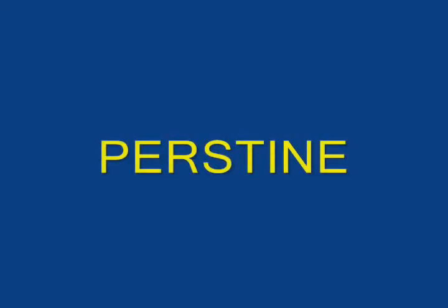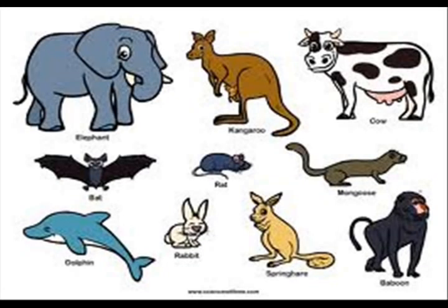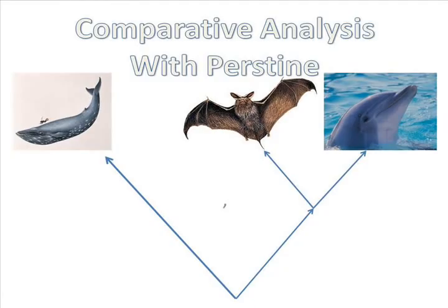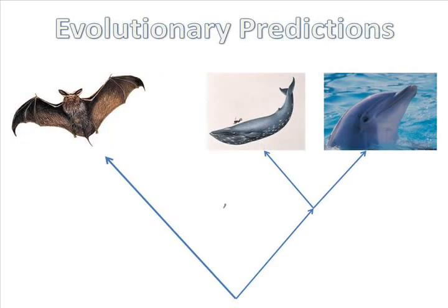My favorite example is Prestin. Prestin is the name of the gene and the name of the protein that the gene codes for. This gene is present in all mammals. However, if you make a comparative analysis with Prestin, then according to the results, dolphins and bats appear to be more closely related than dolphins and whales. This contradicts evolution, because evolution predicts the opposite.